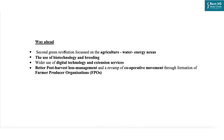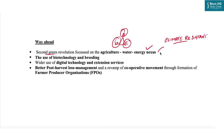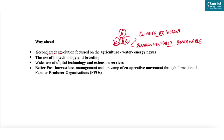To address these challenges, India needs a second Green Revolution focused on the agriculture-water-energy nexus to make agriculture more climate-resistant and environmentally sustainable. Use of biotechnology and breeding will be important for developing eco-friendly, disease-resistant, climate-resilient, and more nutritious crop varieties. Wider use of digital technology and extension services would help in information sharing and generating awareness among farmers. Better post-harvest loss management and a revamp of the cooperative movement through Farmer Producer Organizations (FPOs) can arrest food price volatility and help harness the true potential of Indian agriculture.